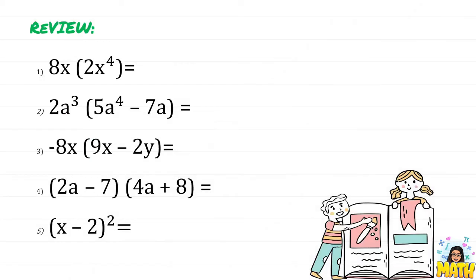Before anything else, let us review by solving the following. Number 1, we are multiplying two monomials. We simply multiply their numerical coefficients — 8 times 2, that's 16 — and then multiply the literal coefficients using the laws of exponents. So that will be 1 plus 4, which is 5.